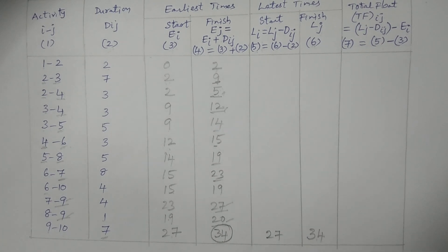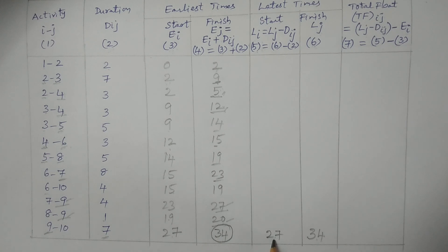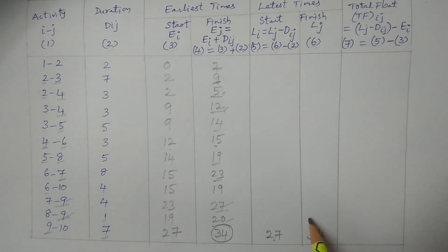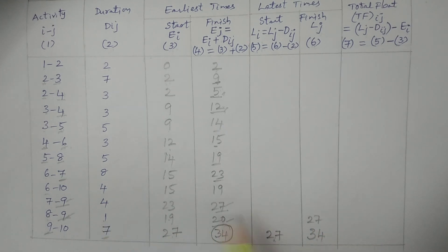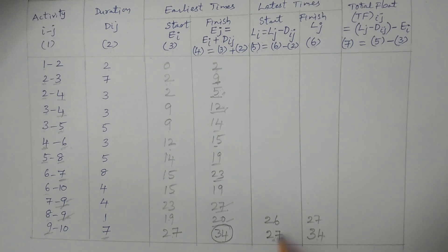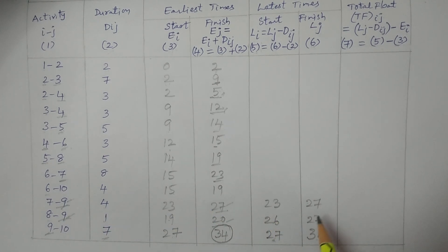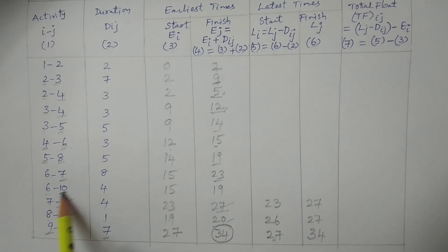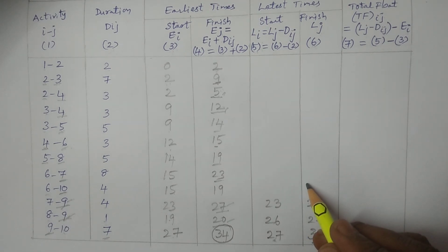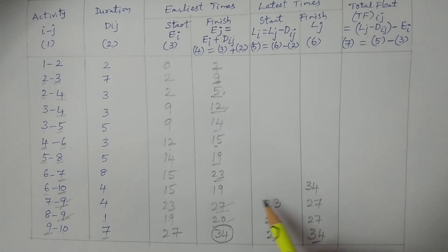For 7 to 9: L9 is 27. 27 minus 4 equals 23. For 6 to 10: L10 is 34. 34 minus 4 equals 30. For 6 to 7: only one value, L7 is 23. 23 minus 8 equals 15. For 5 to 8: L8 is 26, only one value. 26 minus 5 equals 21.